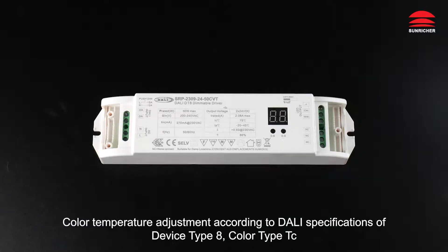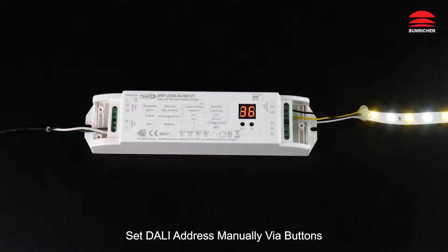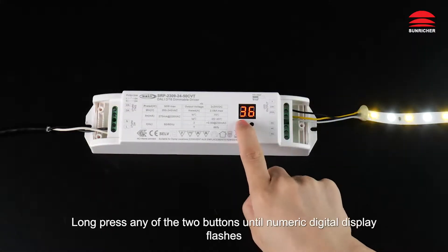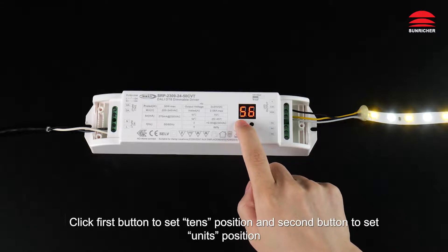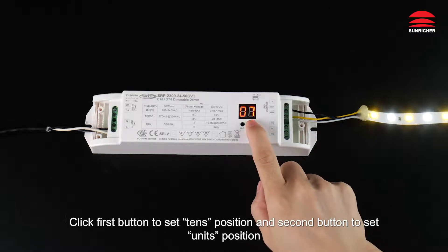Color temperature adjustment according to DALI specifications of device type 8, color type TC. Set DALI address manually via buttons. Long press any of the two buttons until numeric digital display flashes.